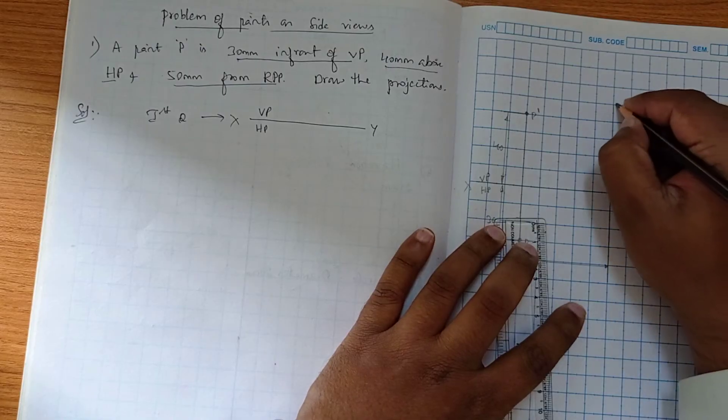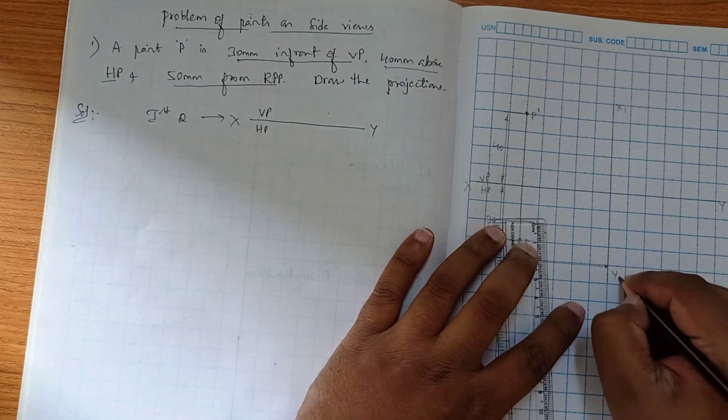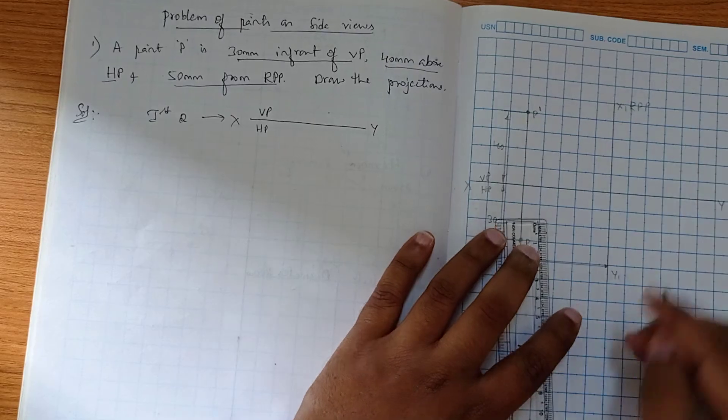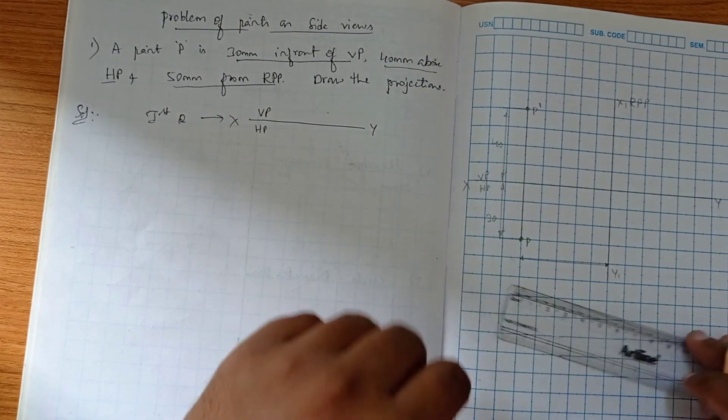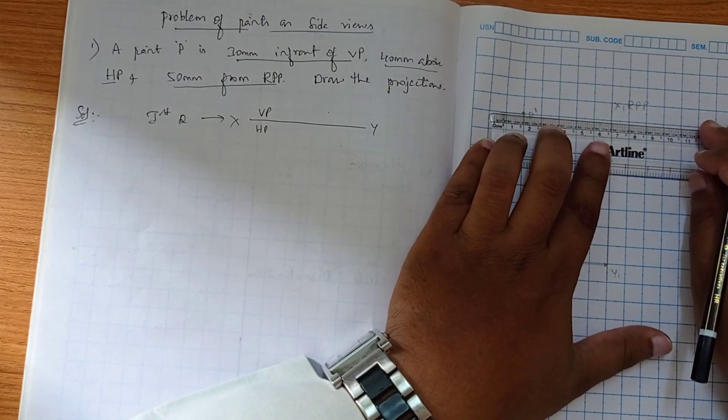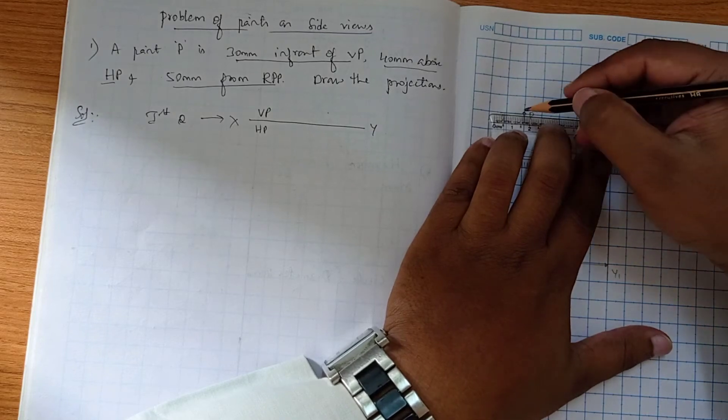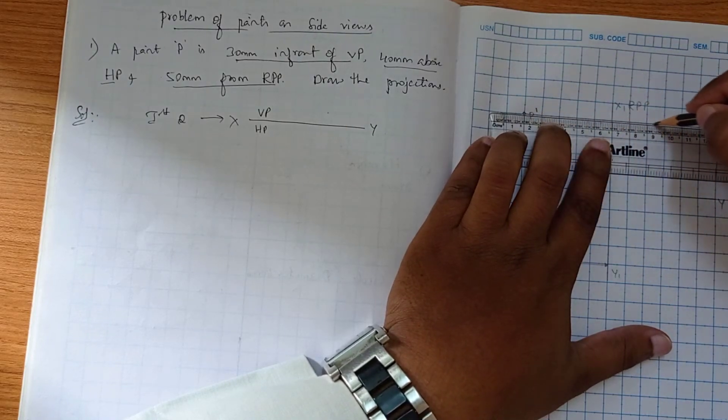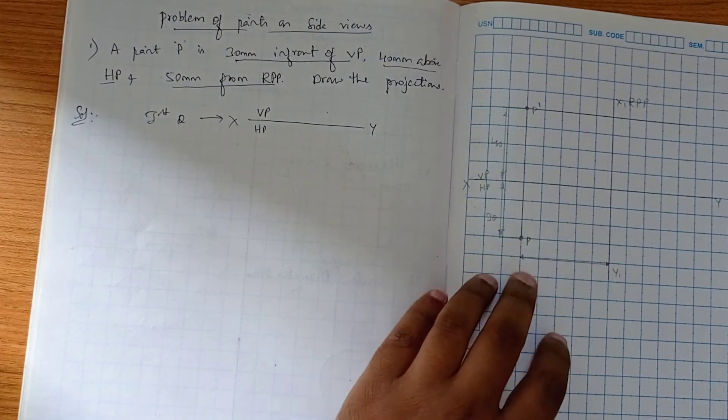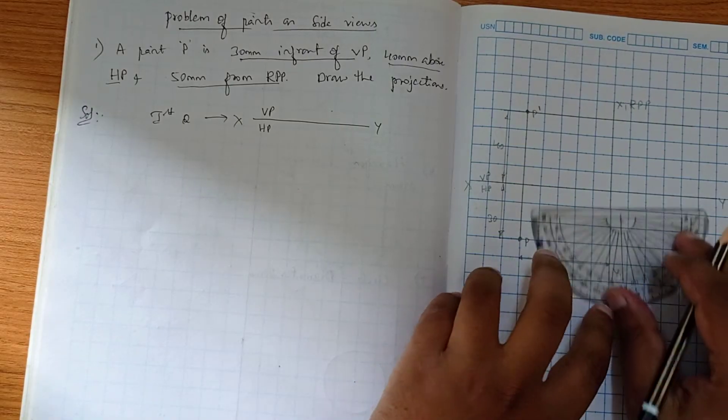So this is X1Y1 RPP, right profile plane. Now we know that side view will be there adjacent to the front view. We draw a straight line. After this we know that we have to draw a 45 degree angle line here.